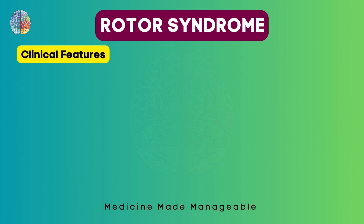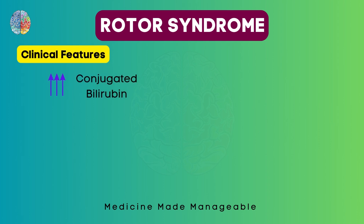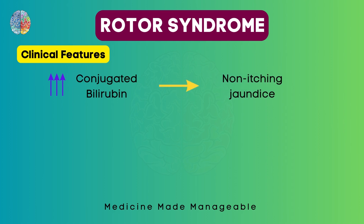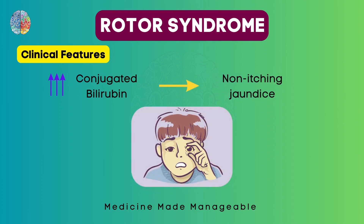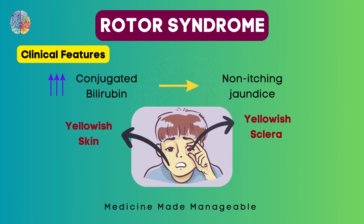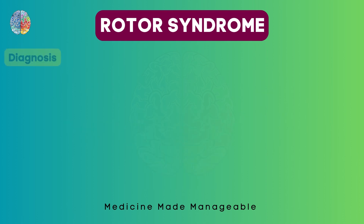Now what are the clinical features? The conjugated bilirubin will increase, leading to non-itching jaundice. The symptoms of jaundice include yellowish skin and also yellowing of the sclera.